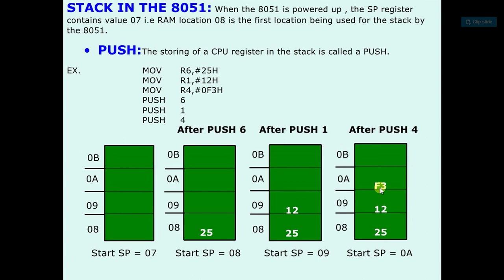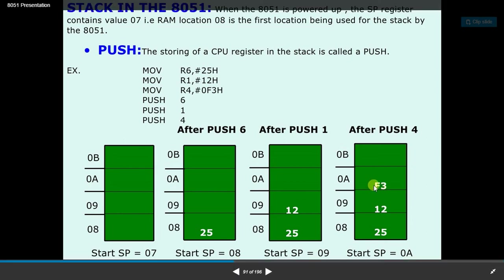And same for that third push instruction. So it will store in the 0A. So after each push instruction, the stack pointer will increment by 1.